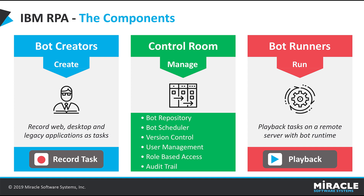Now let us see the components required to work with IBM RPA. There are three main components: Bot Creators, Control Room, and Bot Runners. Bot Creators are used to create our bots. Control Room provides the status of our environment — how many tasks are scheduled and how many tasks are pushed. Bot Runners are used to schedule our bots, managing what time each bot should run.